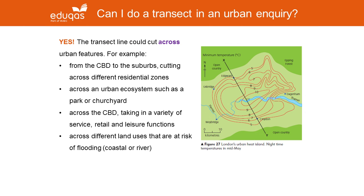So far we've focused mainly on physical geography contexts, but of course you can use a transect in an urban enquiry as well. For example, you might decide to set a long transect across the city from the CBD out towards the suburbs, looking at variations in quality of life across different residential zones.